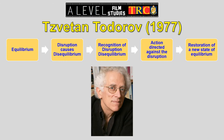In more academic terms, we can look at Zvetan Todorov, also a structural linguist who looked at how stories and language work. He called the beginning the equilibrium — equilibrium means balance: everything is balanced, normal, and safe. Then there's a disruption that causes a disequilibrium — it unbalances everything. Somebody will then have to recognise this disruption, take action against it, and finally restore a new state of equilibrium — the denouement at the end.